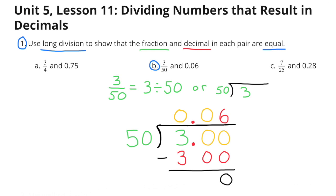Since 50 is too large to go into 3, I put a 0 in the ones place above the 3, then I put the decimal point in. 50 is also too large to go into 30, so I put another 0 in the tenths place. Then I asked how many times does 50 go into 300? 50 goes into 300 six times, so I put the 6 above the 0 in the hundredths place. 6 times 50 equals 300, and 300 minus 300 equals 0. So 3 divided by 50, or 3 fiftieths, equals 6 hundredths.